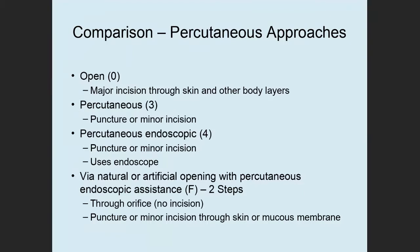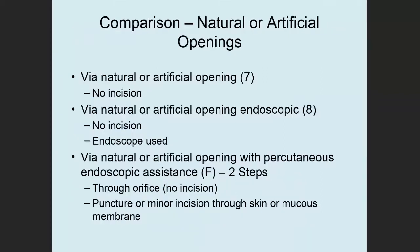For percutaneous approaches: open is a major incision, percutaneous is minor, percutaneous endoscopic is minor, and value F also has a minor component as part of its two steps. The difference between percutaneous (3) and percutaneous endoscopic (4) is that 4 uses an endoscope. Value F has two steps — an orifice and a puncture. All natural or artificial opening approaches include a natural or artificial opening, but value 7 has no incision, value 8 has no incision but uses an endoscope, and value F combines an orifice and a puncture.